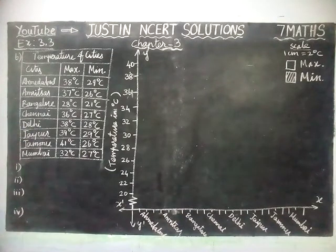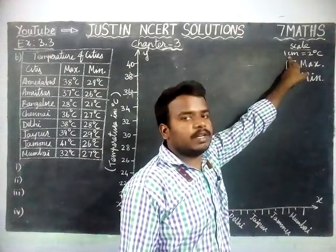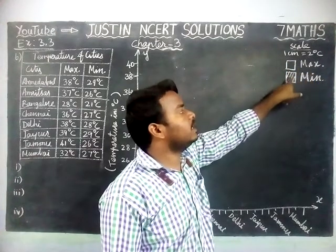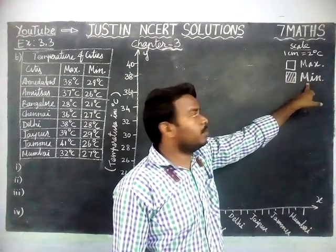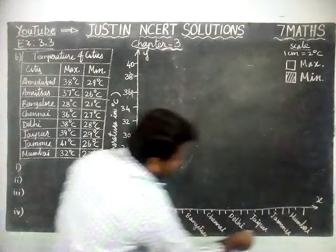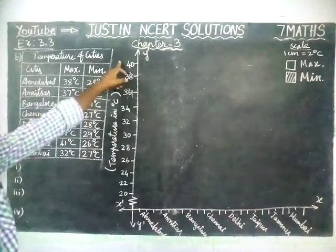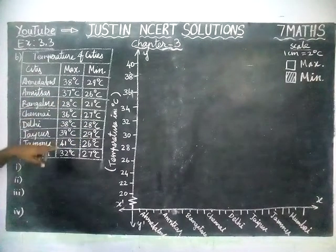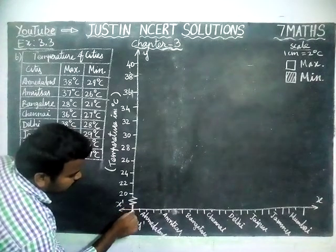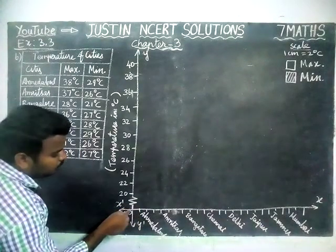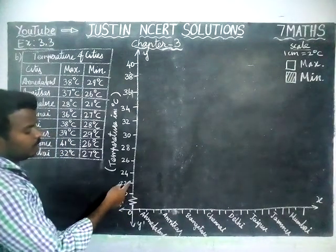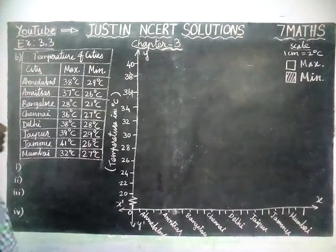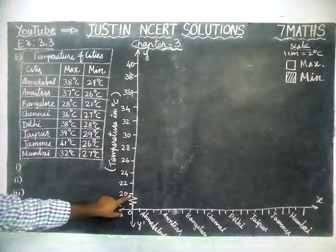Now we are going to draw the bar graph. The scale is 1 centimeter = 2 degrees Celsius. The empty bar represents maximum temperature and the cross-line bar represents minimum temperature. On the x-axis we have the names of the cities, and on the y-axis we have temperature in degrees Celsius. Since values only appear after 20, we have used a wave line up to 20, meaning numbers from 0 to 18 are within that break.